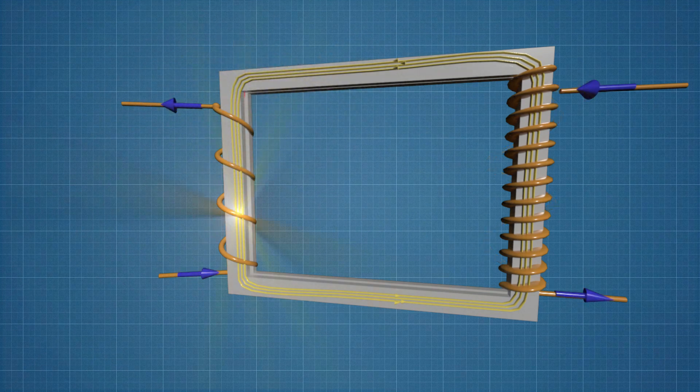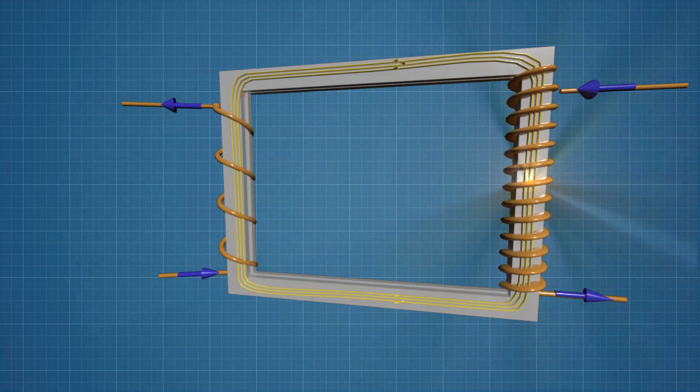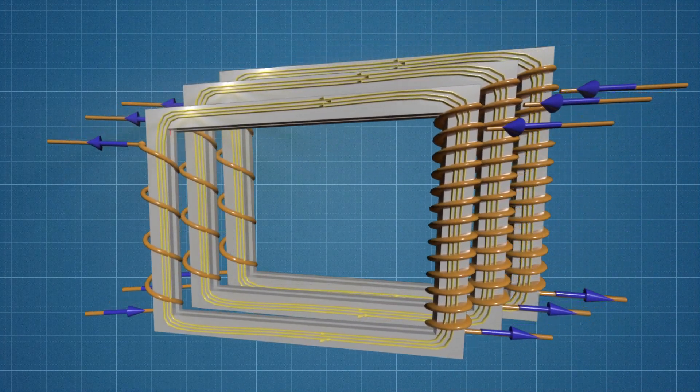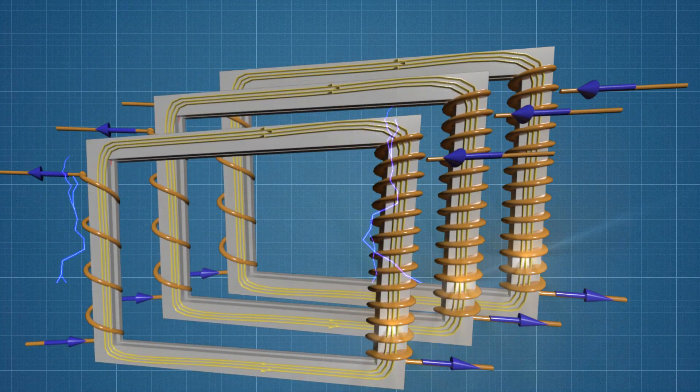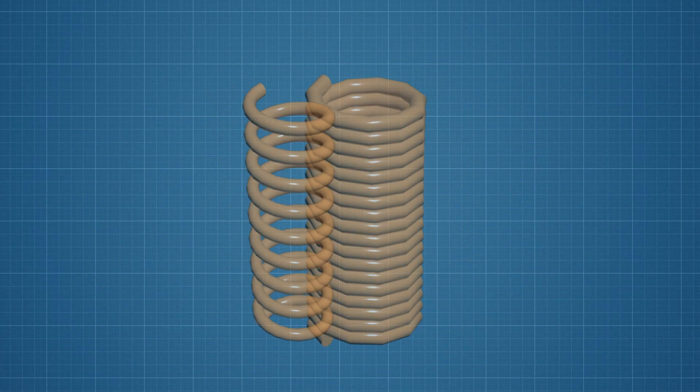That is how a single-phase transformer works in simplified form. A three-phase transformer can be represented as a device consisting of three single-phase transformers with a slightly different configuration of windings, where the primary and secondary windings are embedded relative to each other.